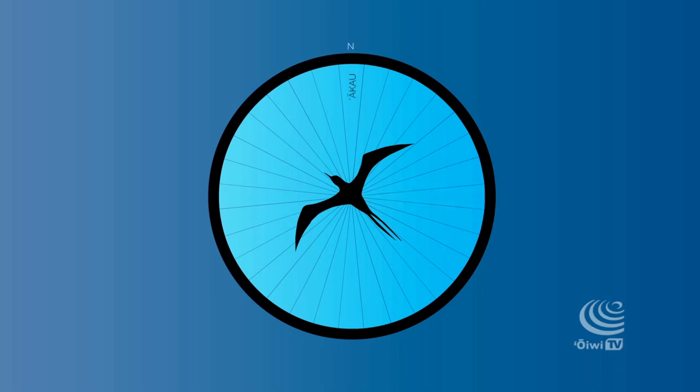North is Aqau, south is Hemera, east is Hikinar, and west is Komohana. So you create the quadrants by those four star houses.